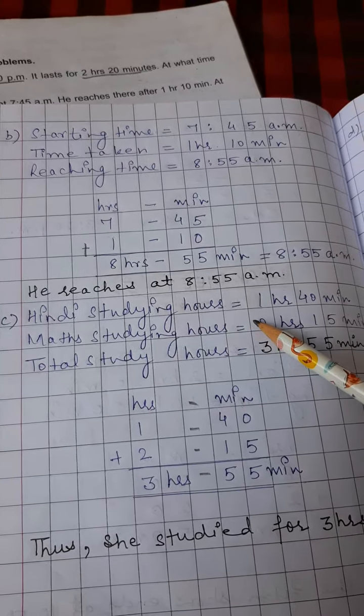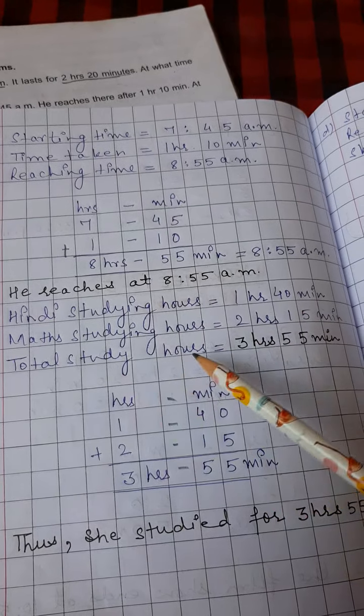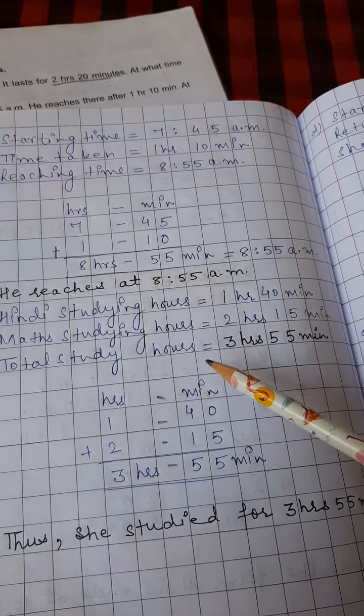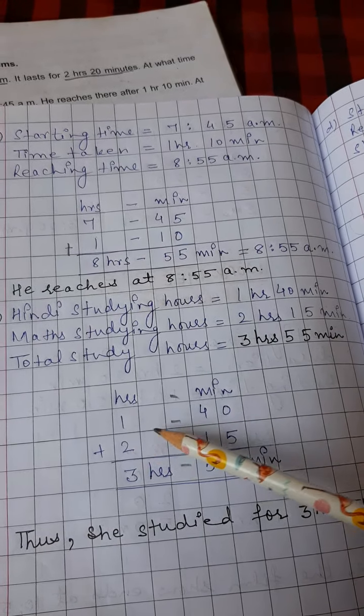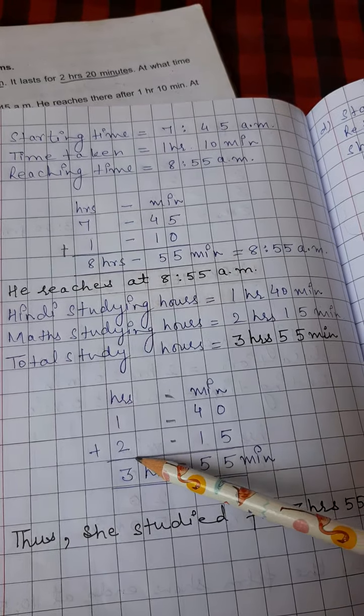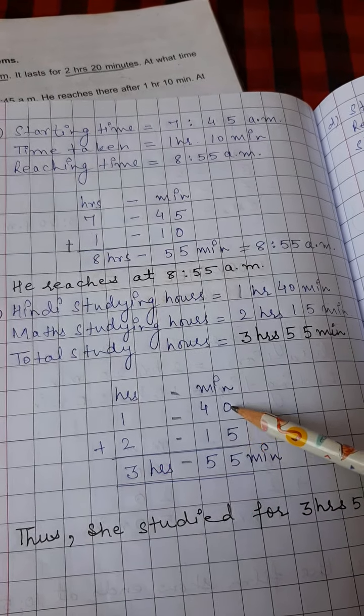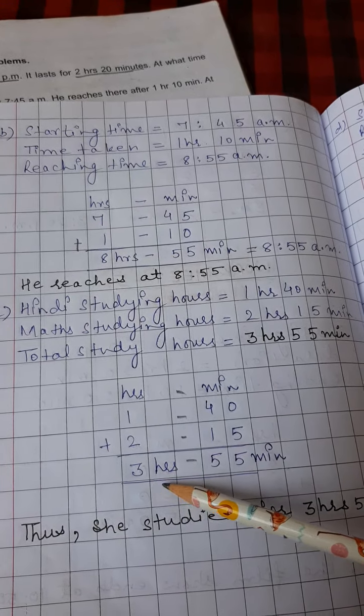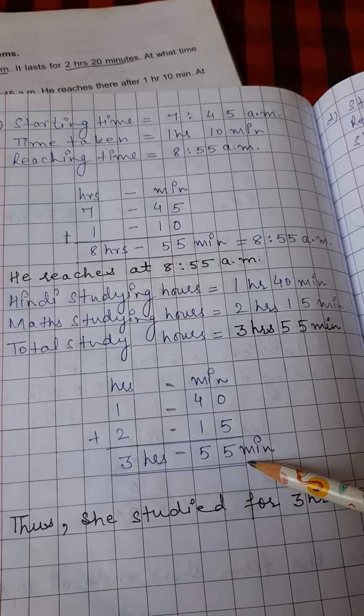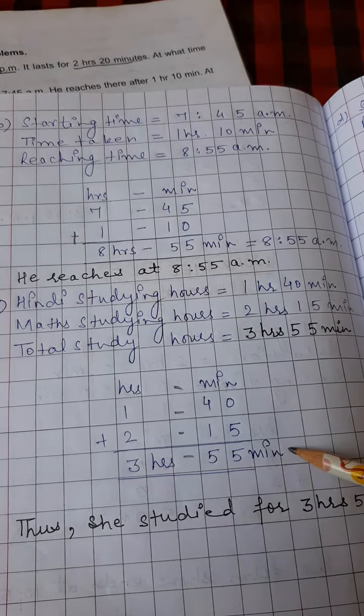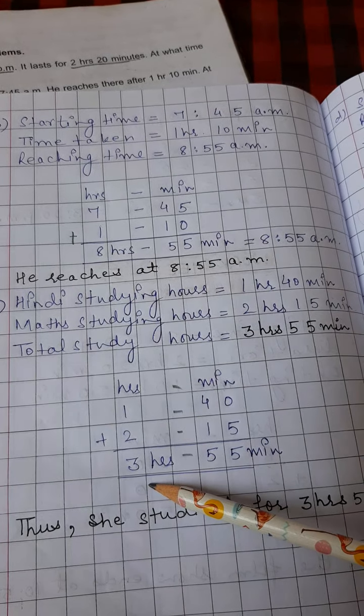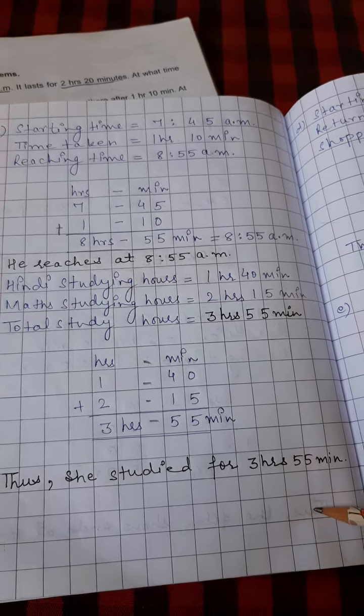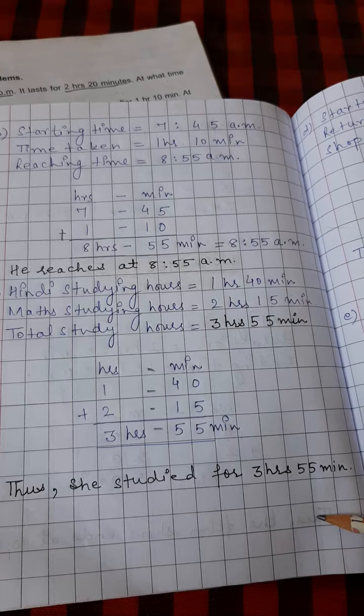Hindi studying hours are 1 hour, 40 minutes. Math studying hours are 2 hours, 15 minutes. And so total study hours for this, we have to add, make 2 columns, add them. Write 1 hour, 40 minutes here and 2 hours, 15 minutes here. Add them. You will get 5, 4 plus 1 is 5, 1 plus 2 is 3. So now this is not 3.55am or pm. These are the study hours. So we have to write the answer as it is, 3 hours, 55 minutes. And you can write the statement in the last like this, that thus she studied for 3 hours, 55 minutes.